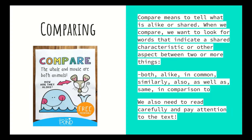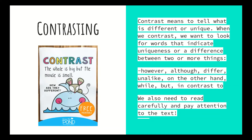We also need to read carefully and pay attention to the text. The two visual examples are great, but when we're reading, there aren't always visuals. So we have to make sure we are really taking information in and mentally setting things apart: What two items are being compared or contrasted? What makes item A unique? What makes item B unique? What do items A and B share? Contrast, on the other hand, means to tell what is different or unique — we look for words that indicate uniqueness or a difference between two or more things.